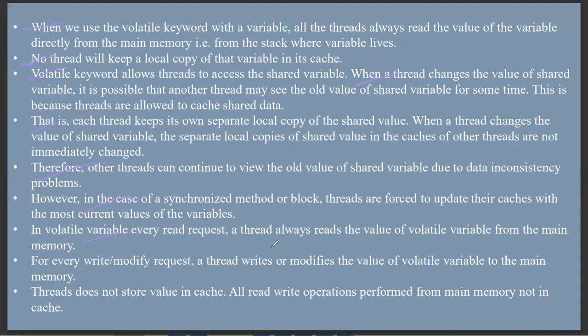So, at any time, the value of the volatile keyword may be changed. For every write or modify request, a thread writes or modifies the value of the volatile variable to the main memory. In all main memory access operations — write it, modify it — it is done consistently. Thread does not store value in the cache. All read and write operations are performed in main memory, not in cache.